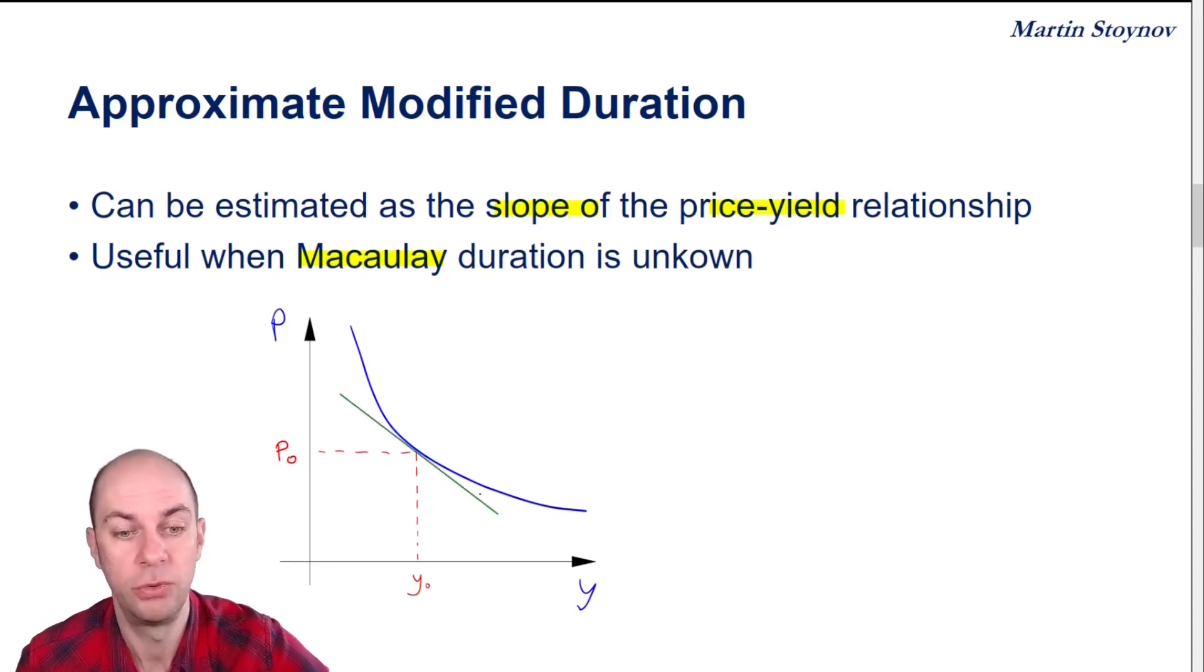I may try to estimate the slope at this very point. So you can see here the price-yield relationship, the familiar price-yield relationship is inverse and also curved. But in order to obtain that estimate, what I will want to do is shock yields up and down.